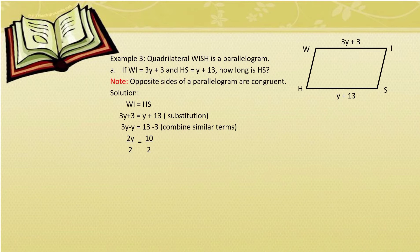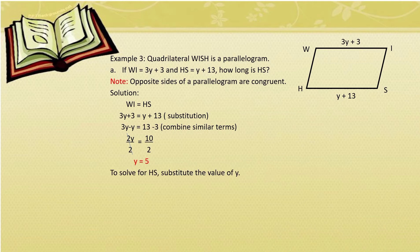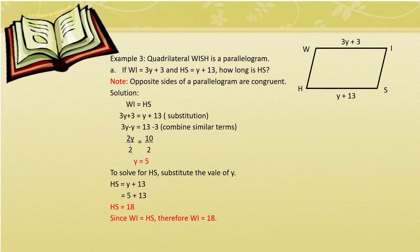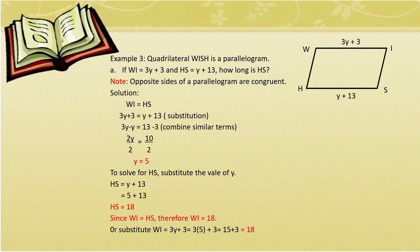Divide both sides by 2: Y = 0. Since we have the value of Y, substitute into HS = Y + 3: HS = 0 + 3 = 3. Therefore HS = 3. And since WI equals HS, WI is also equal to 3. We can verify by substituting into 3Y + 3 with Y = 0: 3(0) + 3 = 3. Still we get 3.